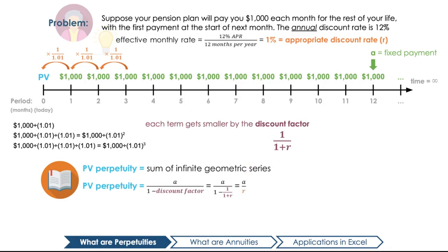The intuition behind this formula is that since the present value of each payment will get smaller and smaller as time goes on, it will approach zero, and eventually will reach a point where the next payment adds nothing extra to our present value. Even though the theory is complicated, this formula is even easier to remember than our present value formula. We'll plug in $1,000 for our initial payment and then plug in the period rate, 0.01, to get a present value of $100,000 for this perpetuity.